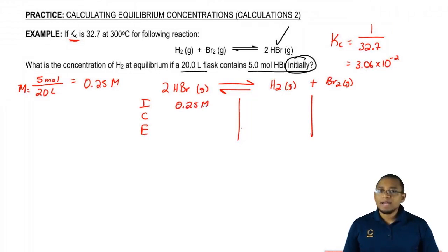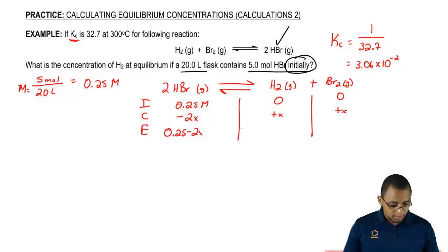So that's our initial amount. I don't tell you anything initially about our reactants, so there's zero. Remember, we're losing reactants to make product, plus x, plus x. This is going to be 0.25 minus 2x, plus x, plus x.